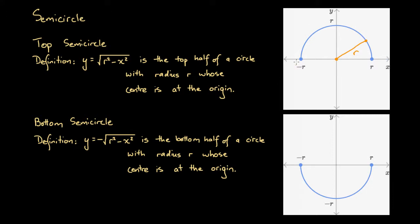It's only the top half — there's no lower half of a circle here. The two blue points indicate that the point minus r, zero and the point r, zero are both included in the top semicircle.